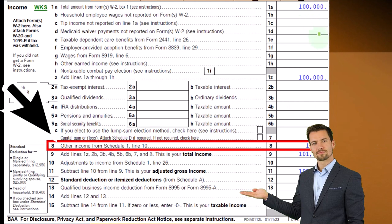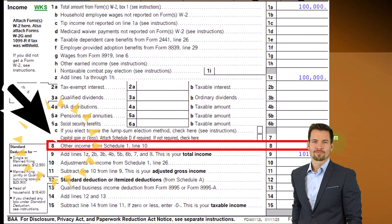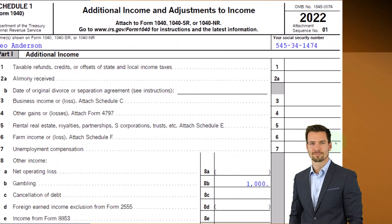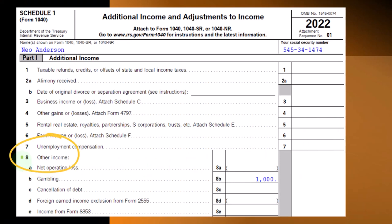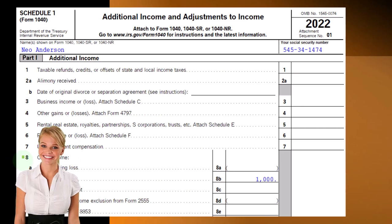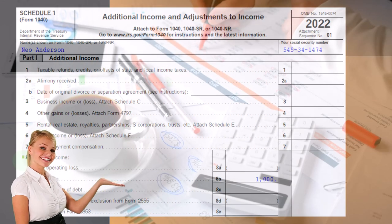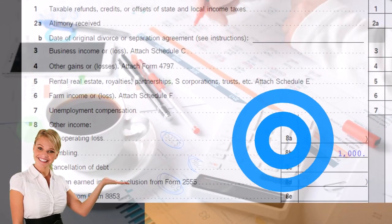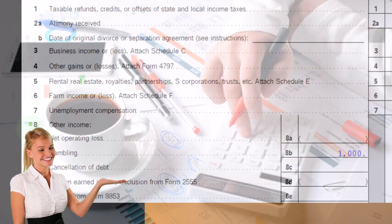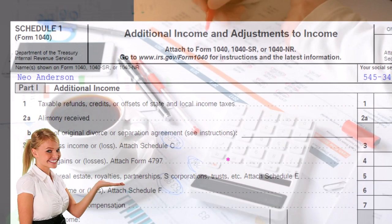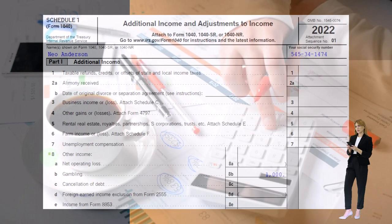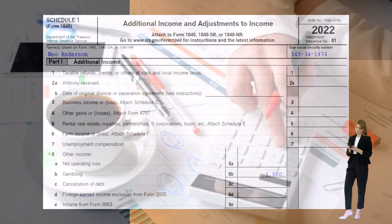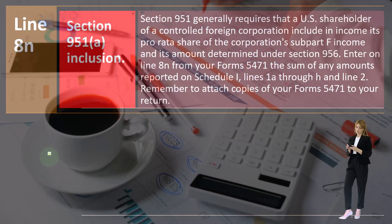We're focused on line number eight of the Form 1040, other income from Schedule 1. On Schedule 1 we're focused at the bottom on line eight with the other income. We did about half of them last time and we're going to continue on to more other income categories. These are more random items that don't have a line item elsewhere on the tax return, but because all things are income unless the IRS says otherwise, you can have a bunch of random scenarios where you might have income here.